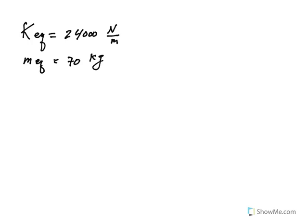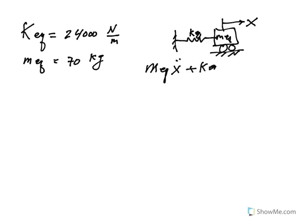So the differential equation of this system, of course there's no friction here, so as if this guy is just rolling and disturbed by X, it's going to be mass equivalent X double dot plus K equivalent X equals zero. So in this case, it would be 70 X double dot plus 24,000 X equals zero.